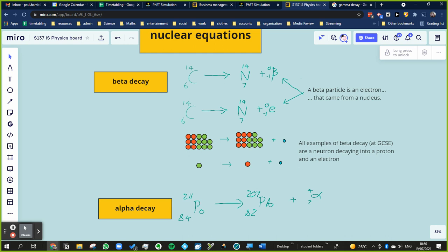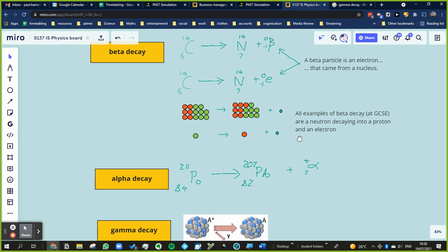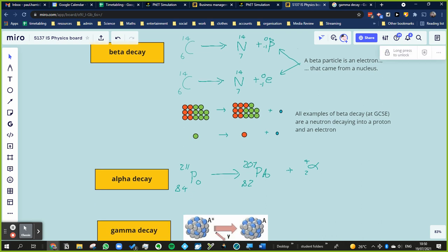At A-level, you also learn that another particle gets given off called an anti-neutrino, but at GCSE, we don't need to worry about the anti-neutrino. That beta decay happens generally with smaller nuclei.